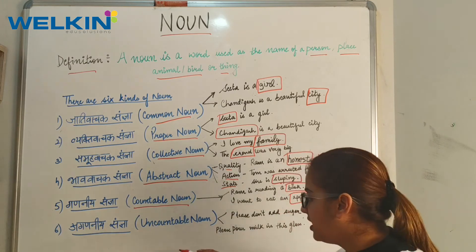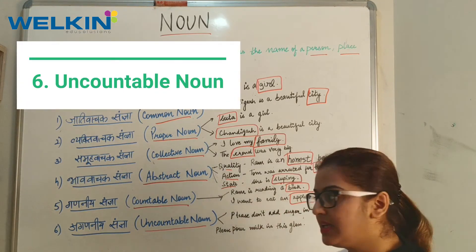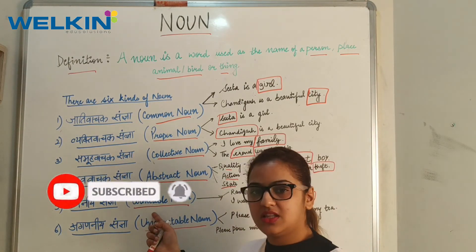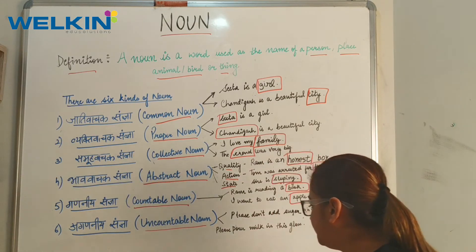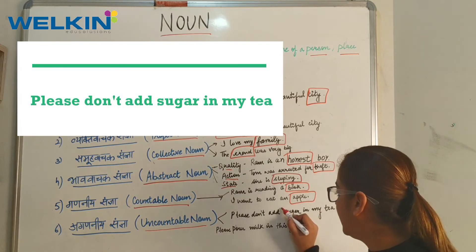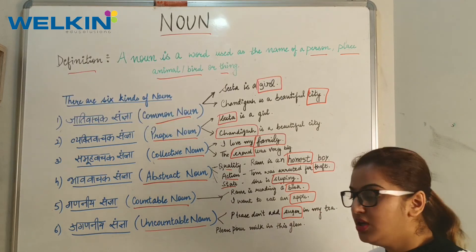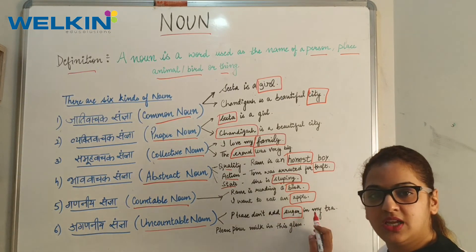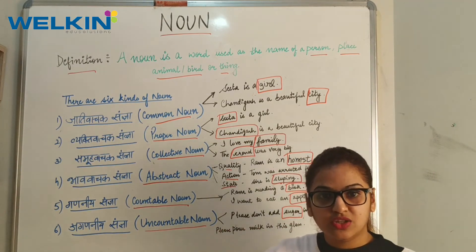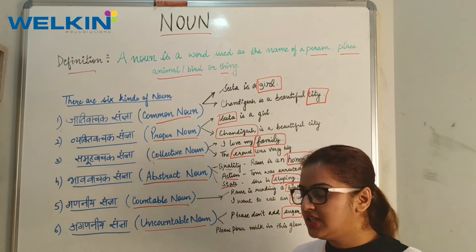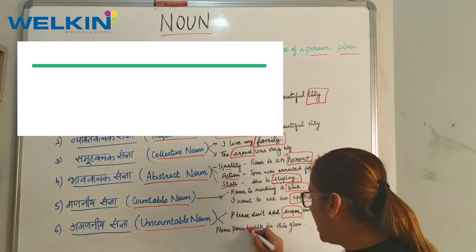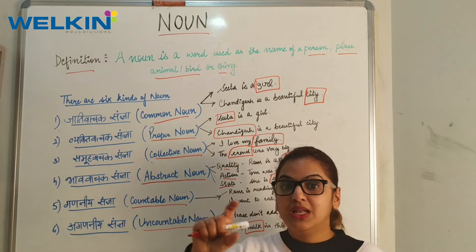Last one — Uncountable Noun. Isko Hindi mein kehte hai Aganiya Sangya — it is the opposite of countable noun; we cannot count it. Example: Please do not add sugar in my tea — 'sugar' is uncountable; you cannot count individual grains of sugar. If someone adds sugar with a spoon, you can count the spoons, but not the sugar itself. Another example: Please pour milk in this glass — 'milk' is also uncountable; the glass can be counted, but the milk cannot.